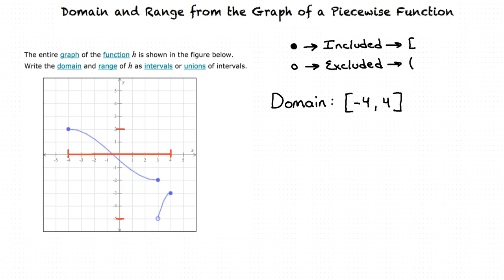There's a gap in the range, though, right? Yes, there is a gap between y equals negative 3 and negative 2. So we have to write our range as a union of two intervals.